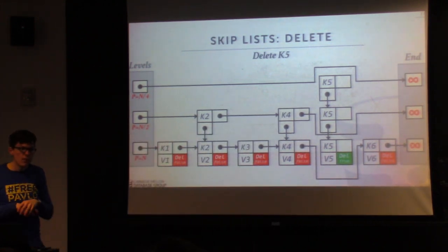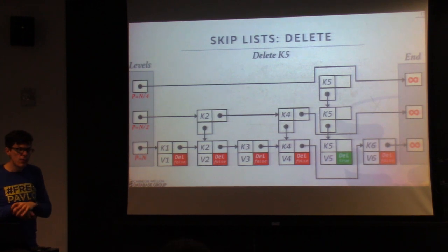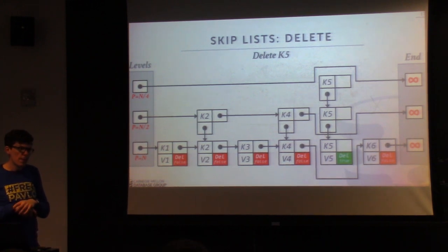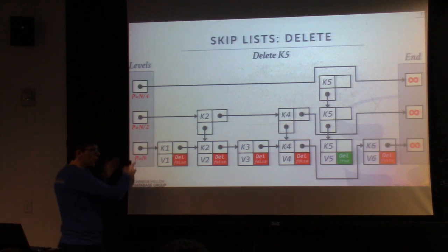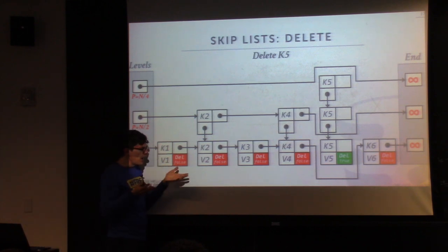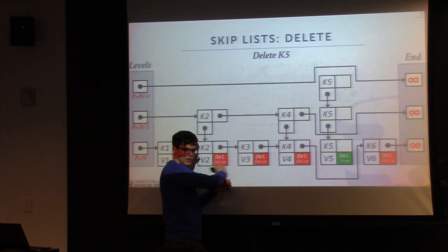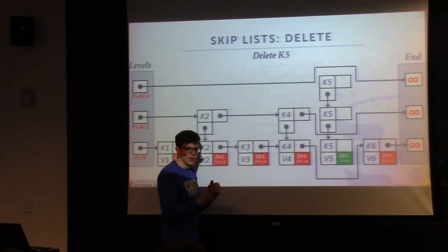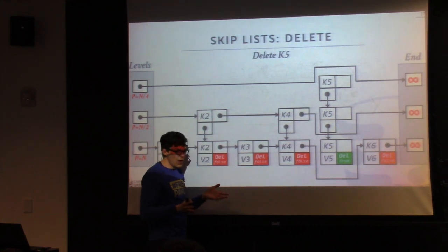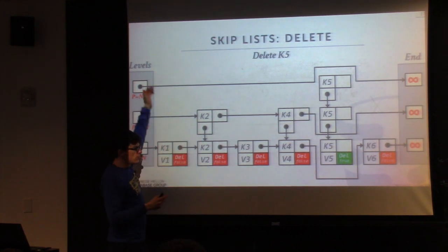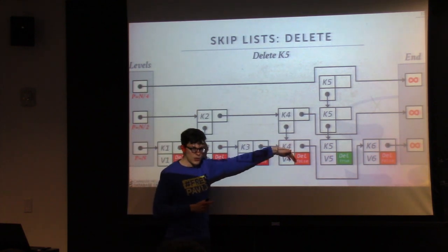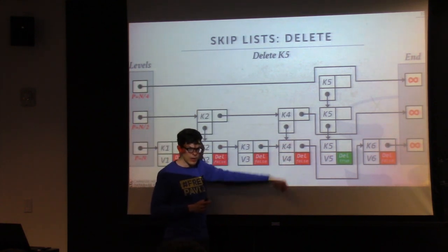Student question: how do you find other nodes that are pointing to the node being deleted? You always start at the top again and it takes O(log n) to trace where you need to be. And you only care about what the leaf node is that's pointing to it — you know the only thing pointing to entries in your tower is yourself.